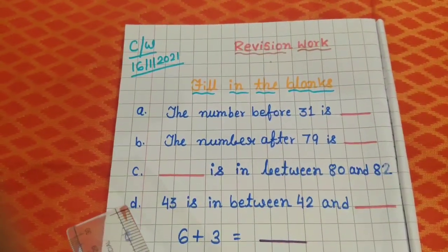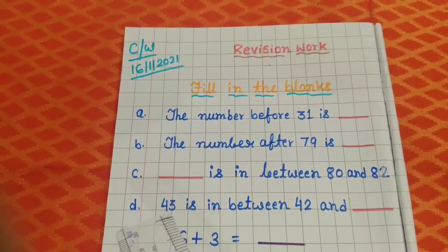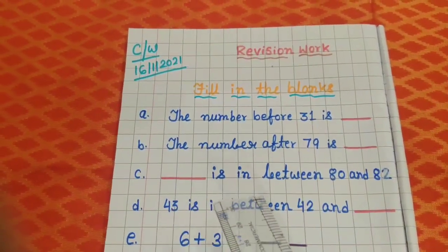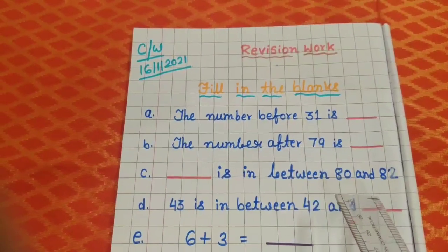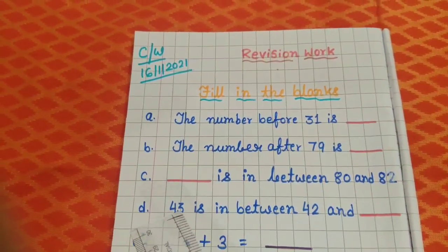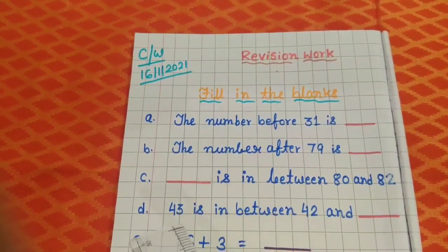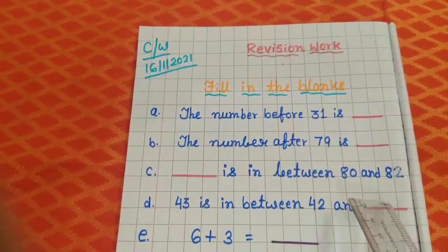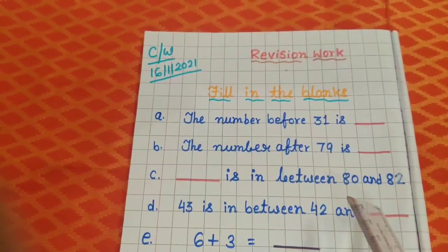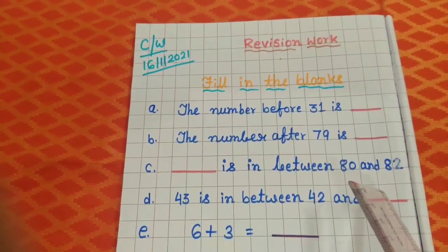Number D. 43 is in between 42 and dash. Understood? 43 is in between, that means 43 is between number 42 and dash. So you have to write here the correct number. Understood, everybody?